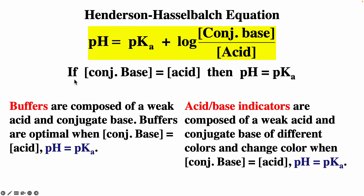Buffers are composed of weak acid and conjugate base. Buffers are optimal when the concentration of the base equals the concentration of the acid, which means the pH equals the pKa. So if you're going to try to make a buffer with a specific pH, you try to find an acid that has a pKa close to the pH that you're trying to make the buffer for.